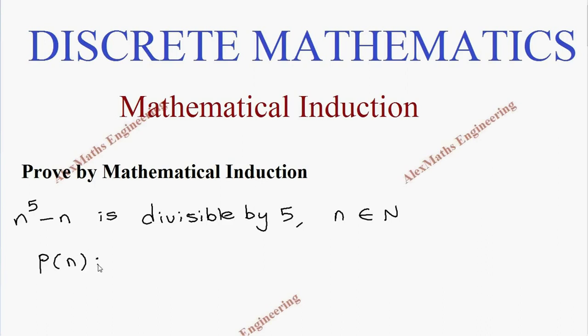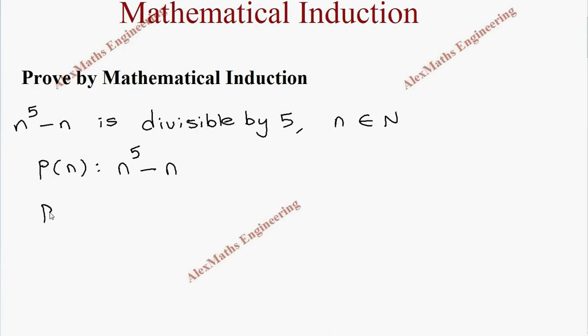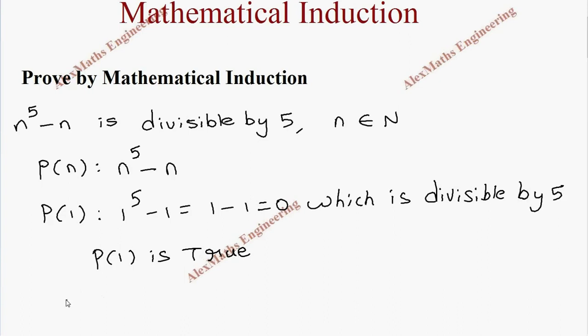P(n) is n^5 minus n. We are going to find what is P(1), which is 1^5 minus 1, which equals 1 minus 1 equals 0. And 0 is divisible by 5, so we can say P(1) is true.